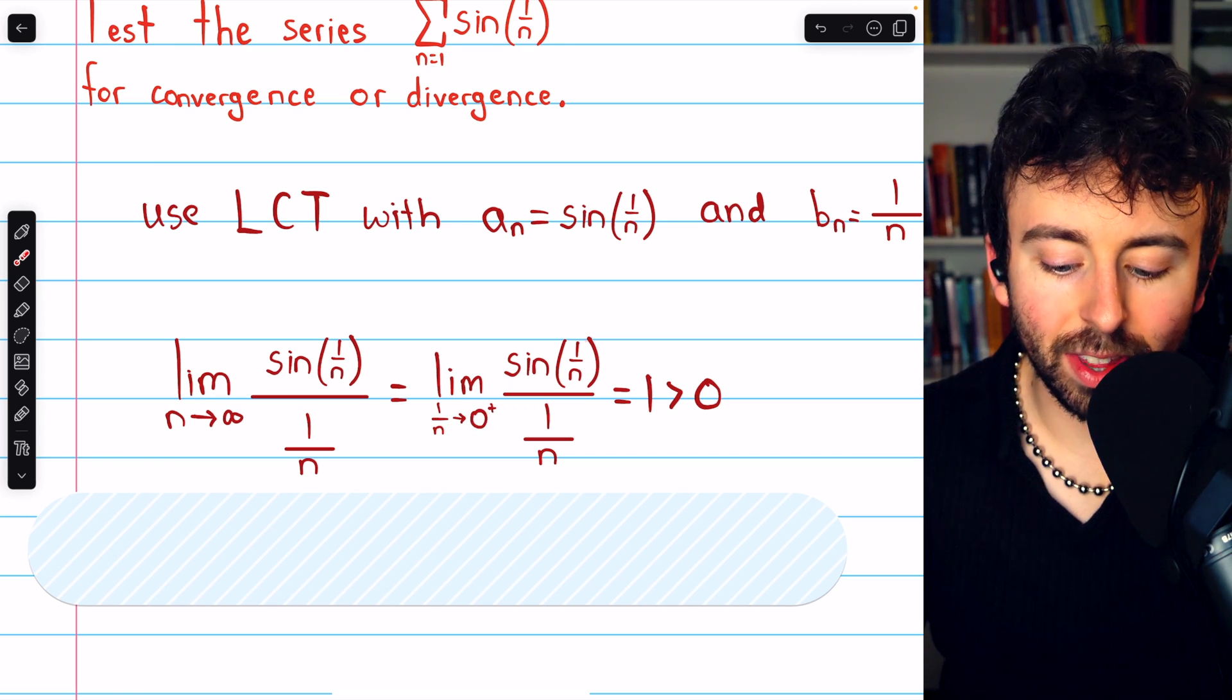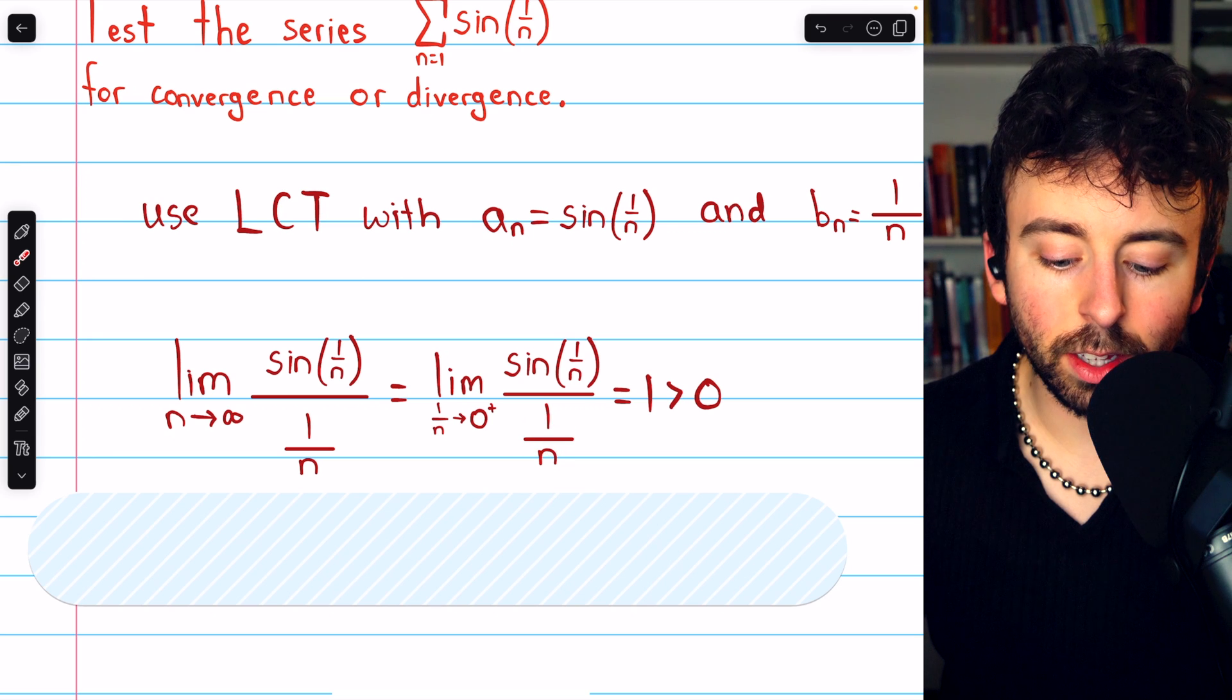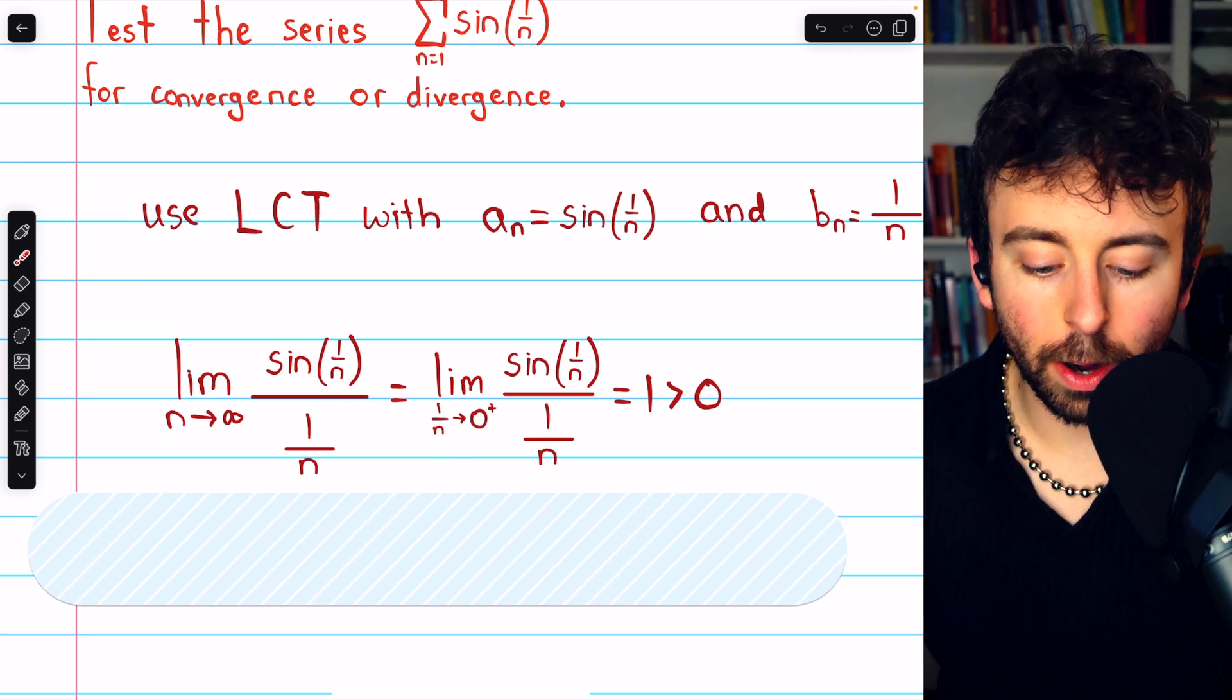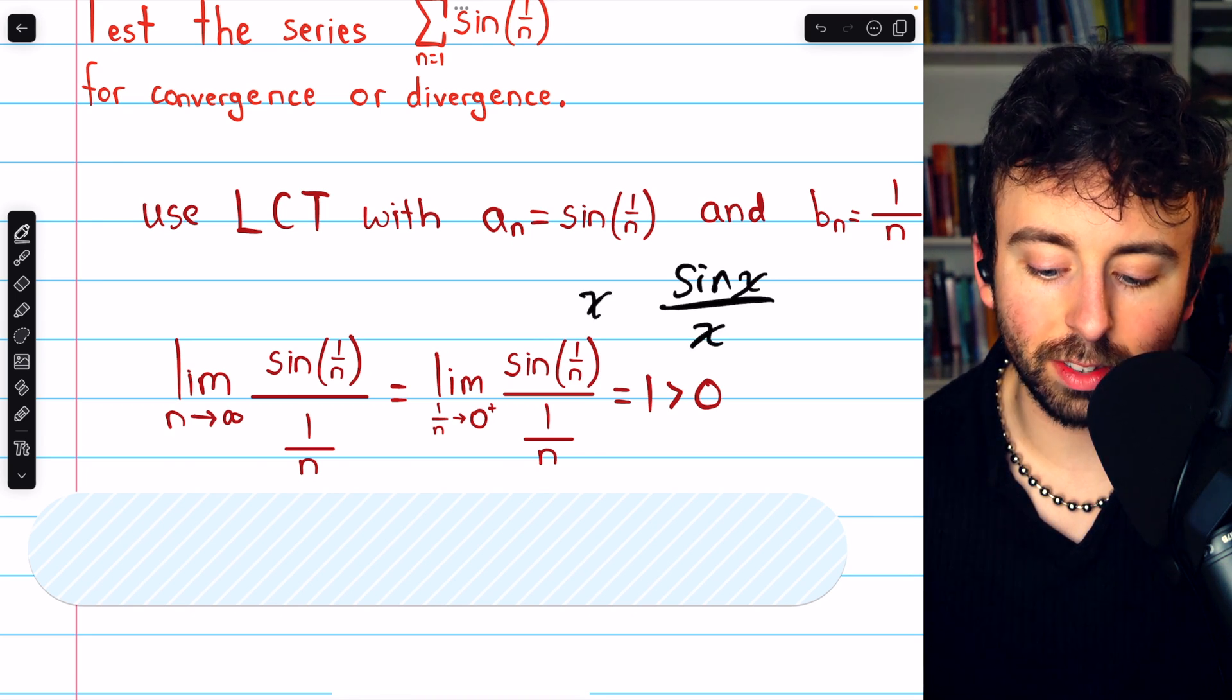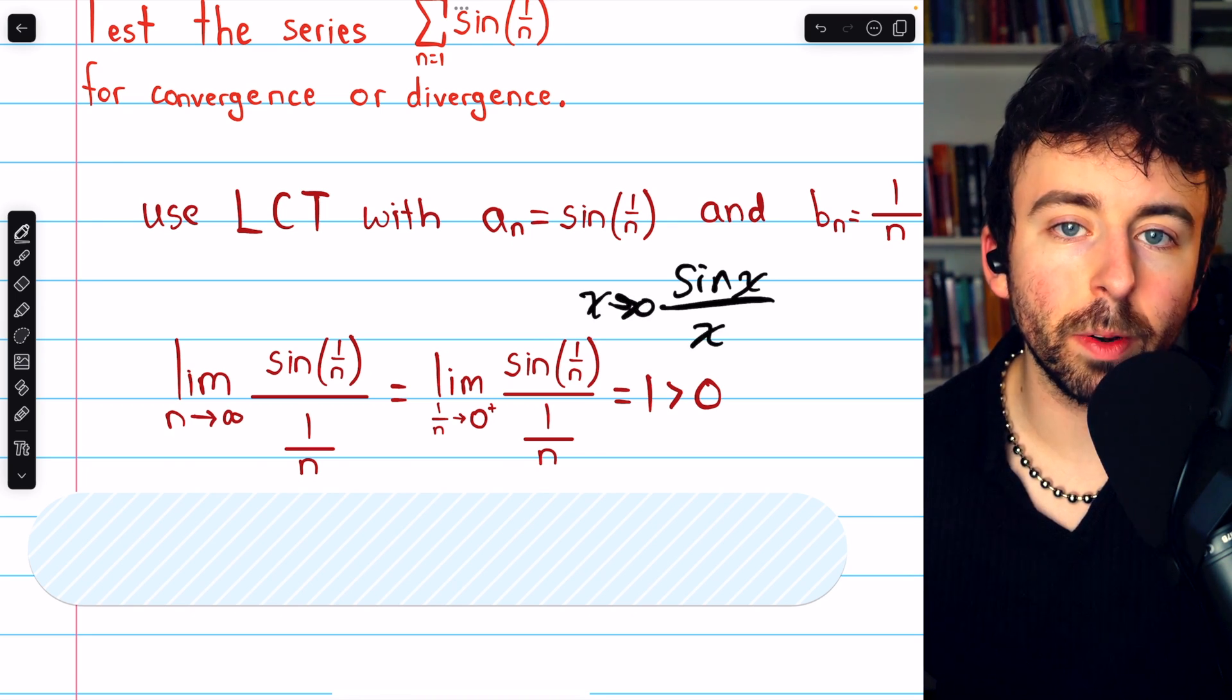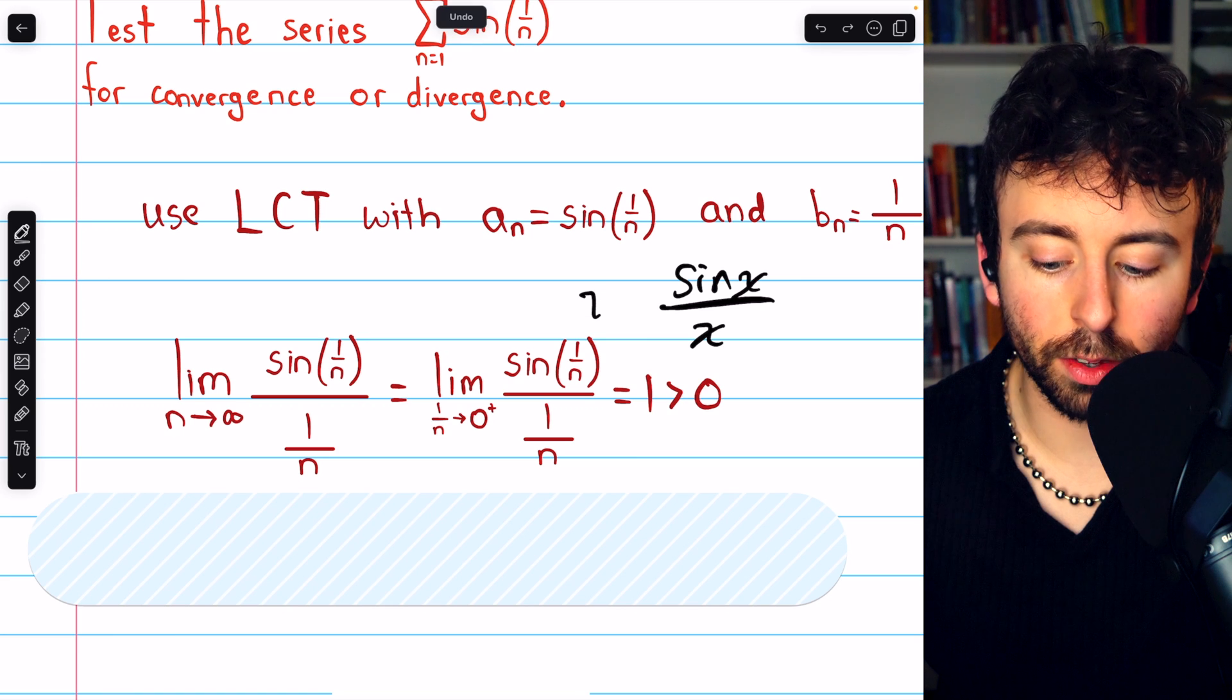But we know that sine of a thing over that same thing, with that thing approaching 0, is equal to 1. That's just sine x over x as x approaches 0, right? That's one you should remember. And if you don't remember, you could just use L'Hôpital's rule.